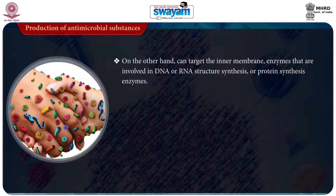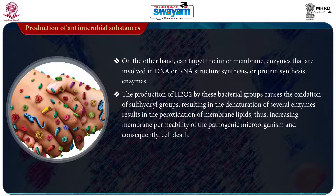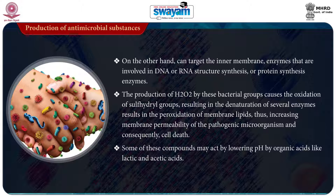Microsins, on the other hand, can target the inner membrane as well as enzymes involved in DNA or RNA structure synthesis as well as protein synthesis. Similarly, the production of hydrogen peroxide by these bacterial groups causes the oxidation of sulfhydryl groups, resulting in denaturation of several enzymes and peroxidation of membrane lipids, thus increasing membrane permeability of pathogenic microorganisms and consequently cell death. Some of these compounds may act by lowering the pH through organic acids like lactic as well as acetic acid.